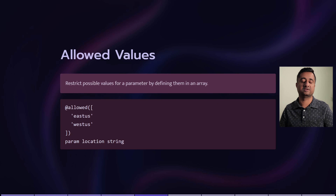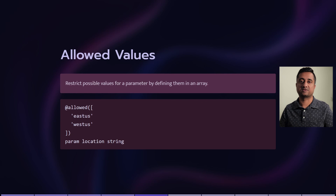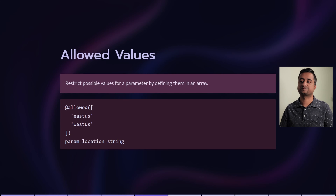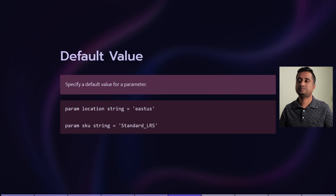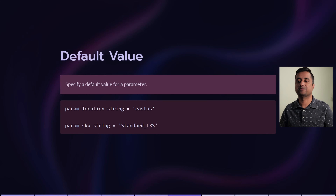Next, and commonly used, is allowed values. When you want to restrict certain values for a particular template when it's being created — in this case I'm restricting the location to East US or West US — it will only allow you to provide these two values.